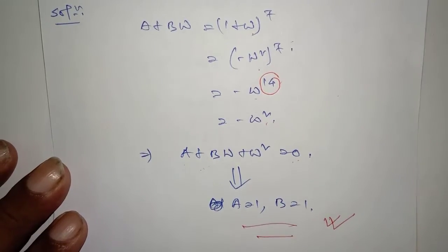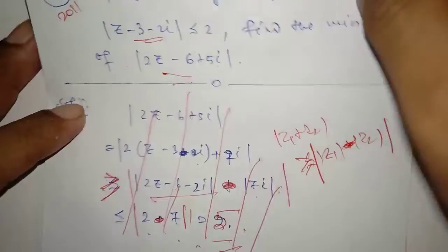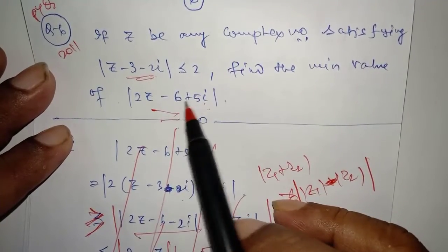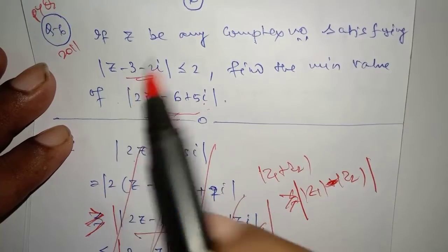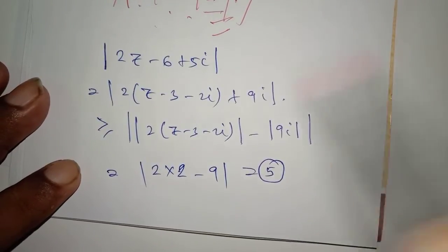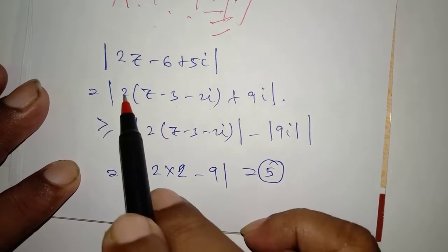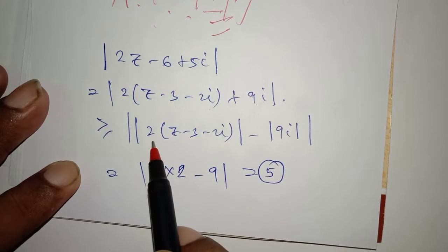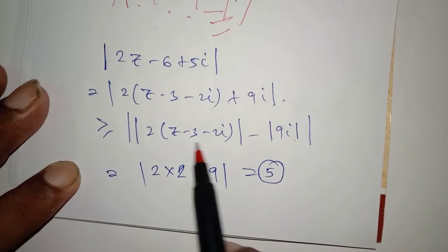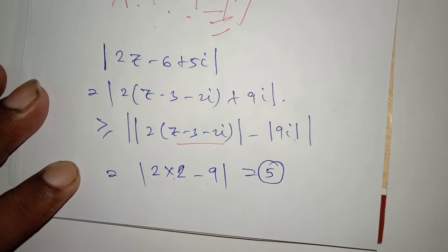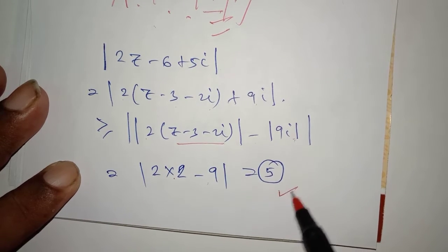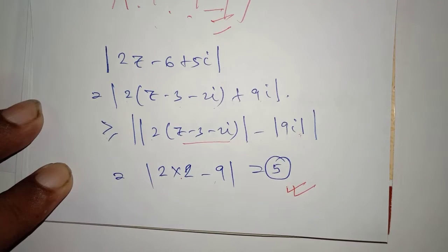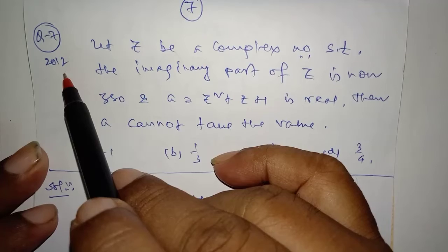PYQ JEE Advanced 2011: if Z is any complex number satisfying the given condition, find the minimum value of the expression. Take 2 as common and write the equation in this form. So this becomes Z minus 3 minus 2i minus 4i plus 9i, which gives 5i. The minimum value occurs when the expression is greater than or equal to twice this minus the given value. Twice of 2 is 4, and 4 minus 9 is minus 5, whose modulus is 5. So the minimum value is 5.